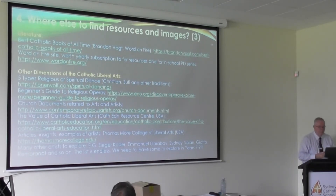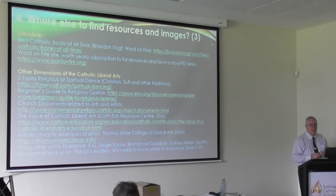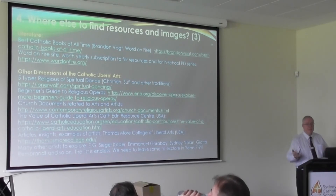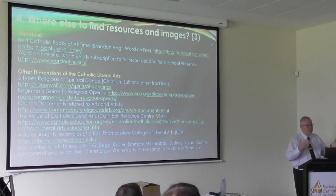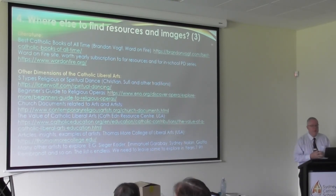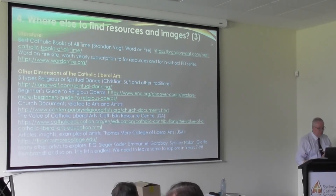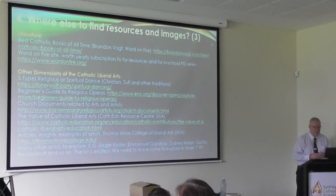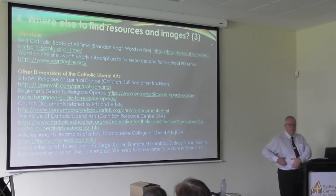For literature, Brandon Vogt works for Word on Fire and has a list of books — people have done the work for you. The question is, what will I do with Year 7? Year 7 — I'm going to be ready for Flannery O'Connor or maybe C.S. Lewis, or maybe very simple texts or children's stories. The Catholic Liberal Arts — dance and opera is a bit more difficult, but maybe you can use excerpts. Church documents, other articles and insights. I've mentioned Emmanuel Garibay, the Filipino artist — he's got that unnerving image of the eye of God looking through the wound of Christ on the cross, so this eye is just looking at you.